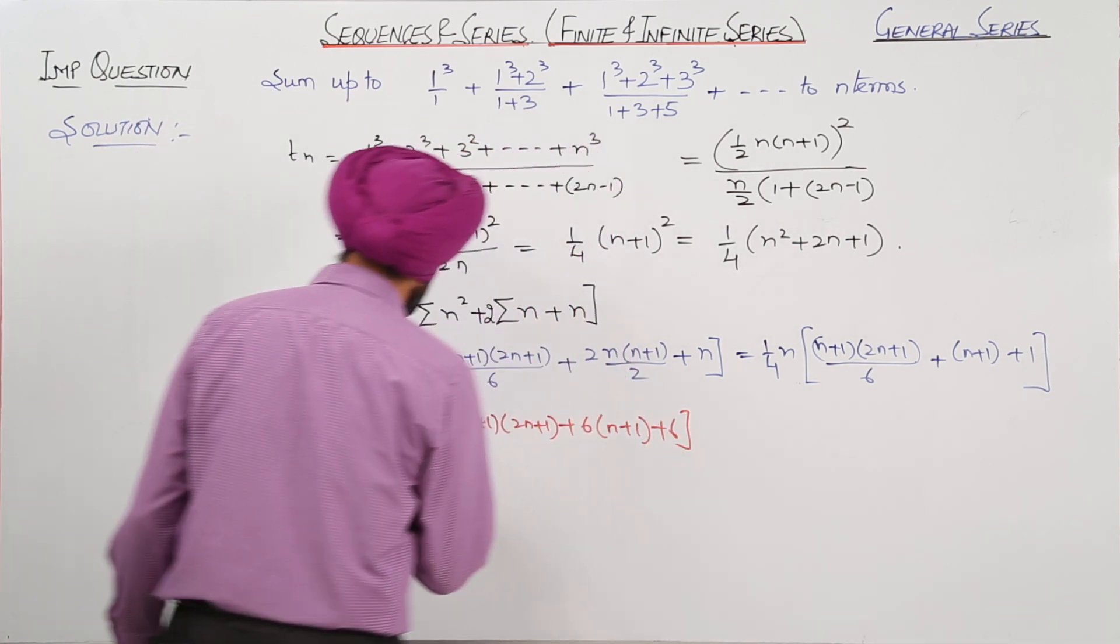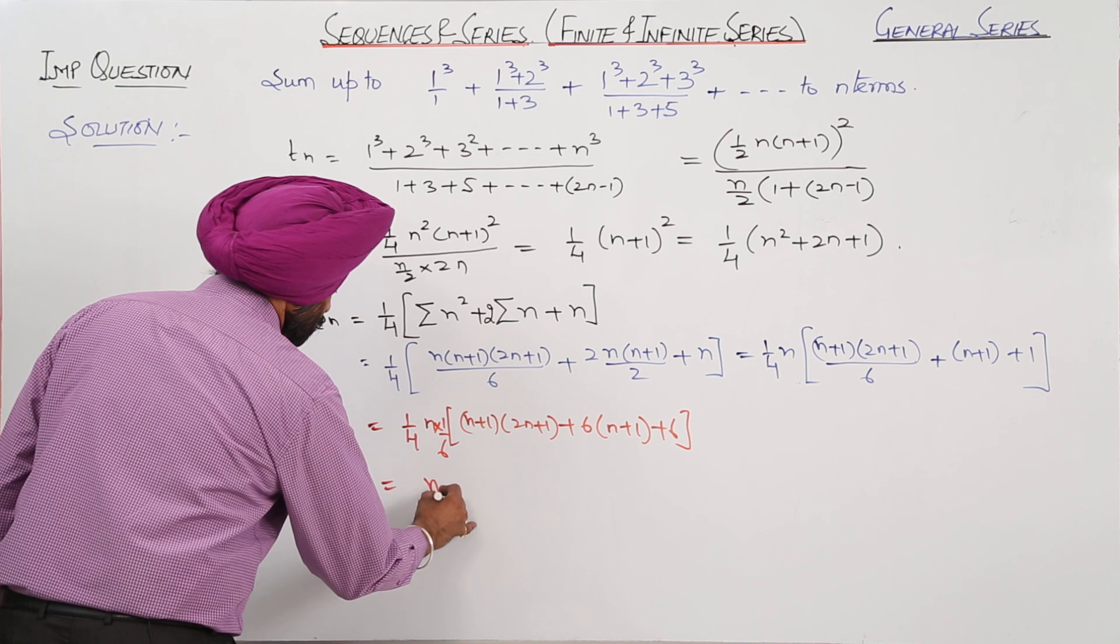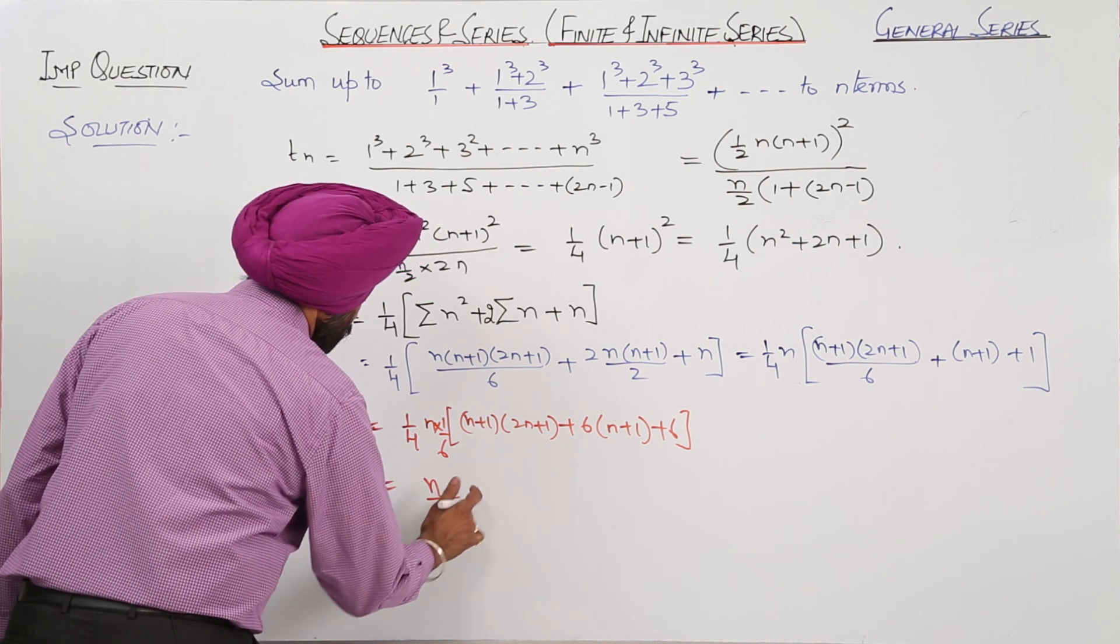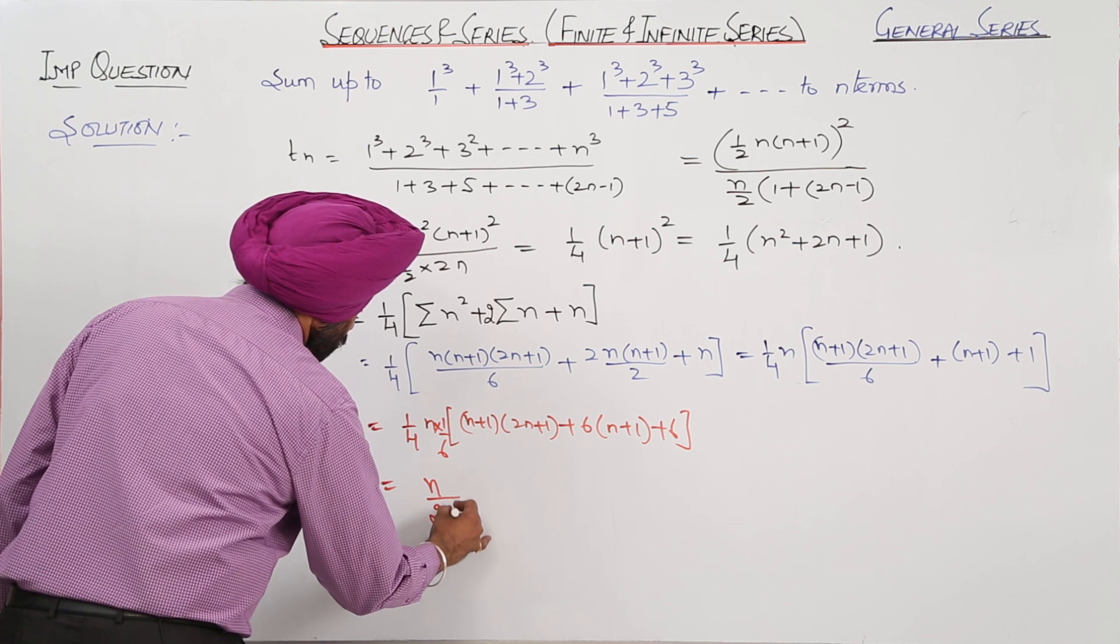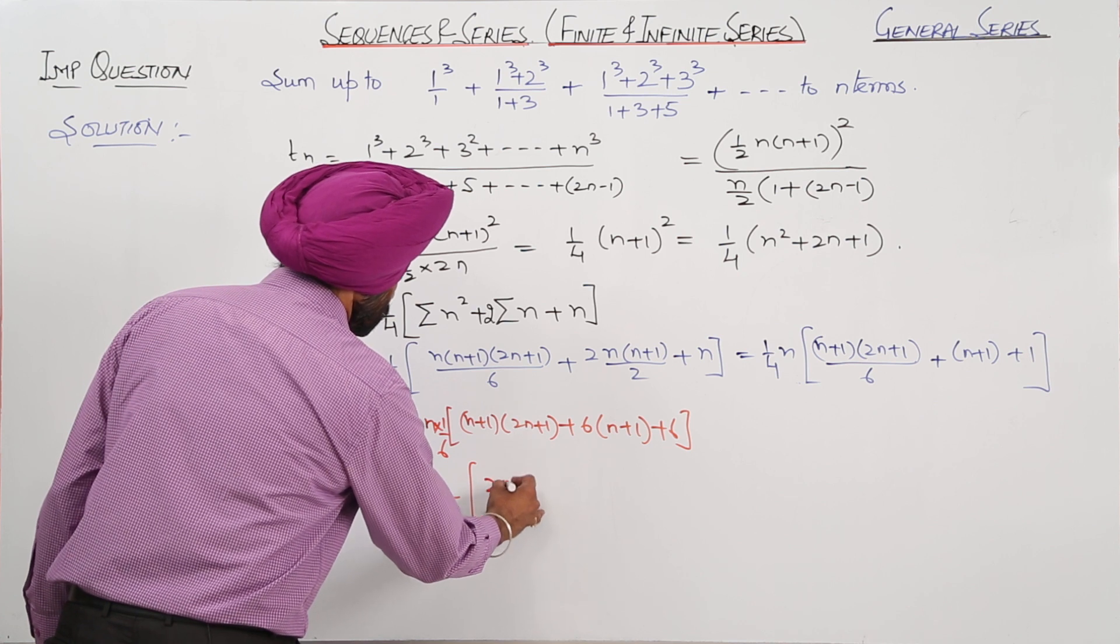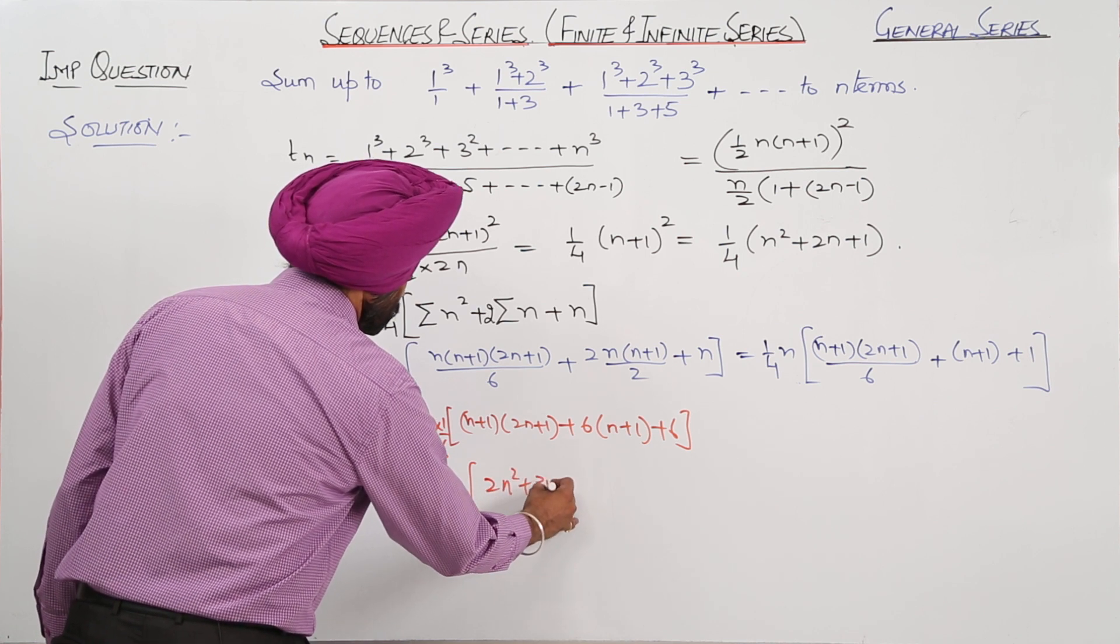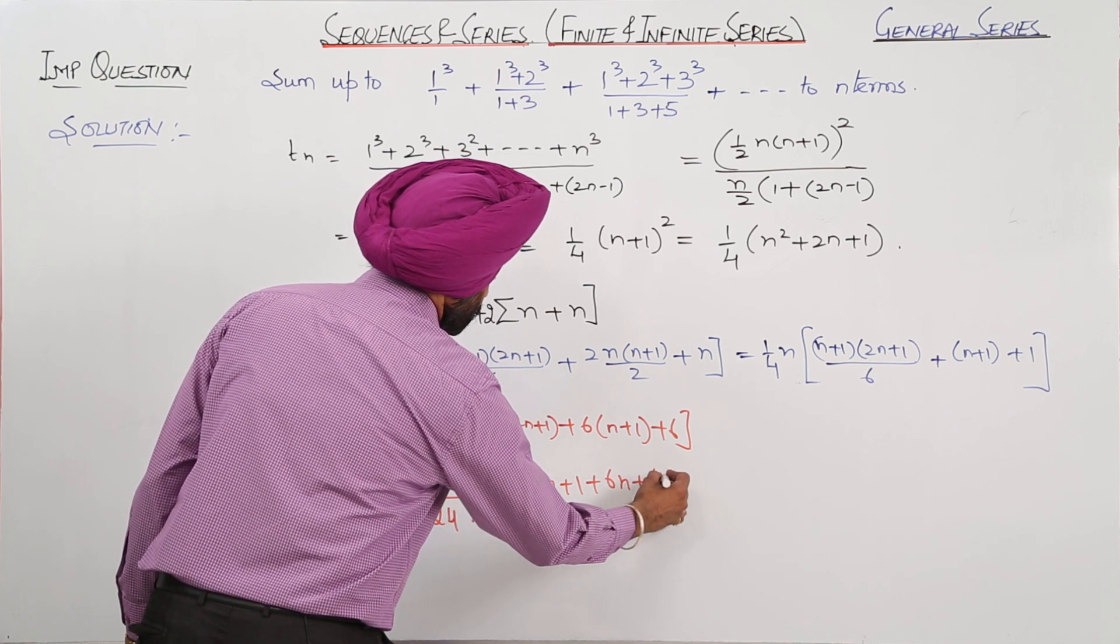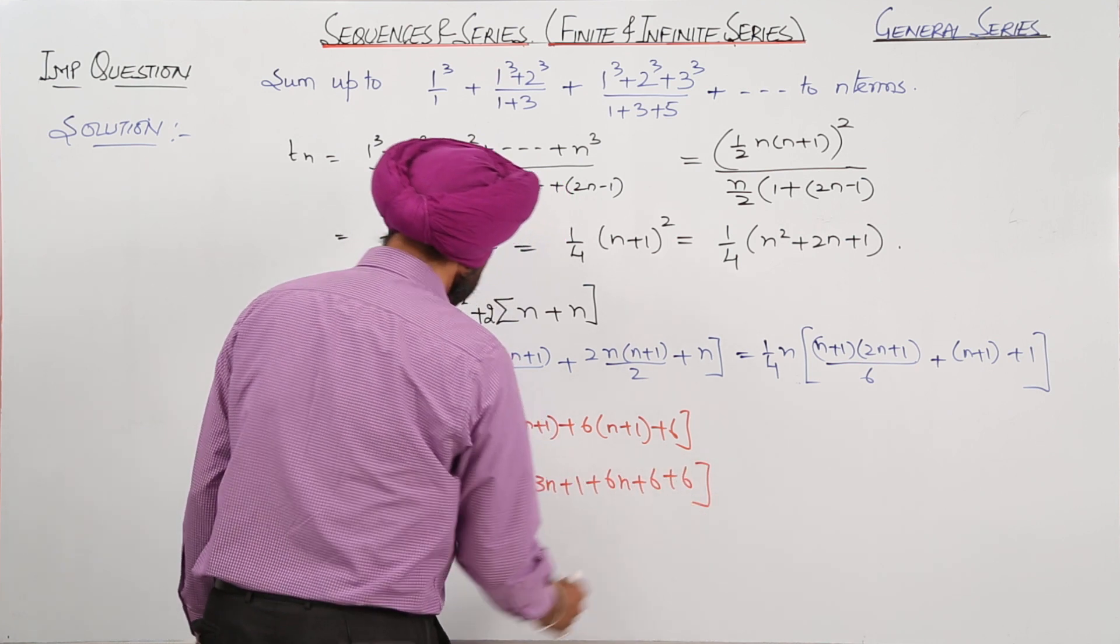So now this is equal to n upon 24. Now here this becomes 2n² + 3n + 1 plus 6n + 6 plus 6.